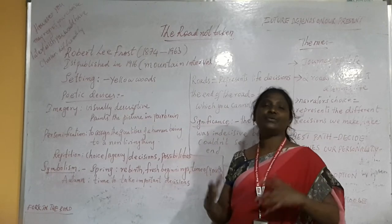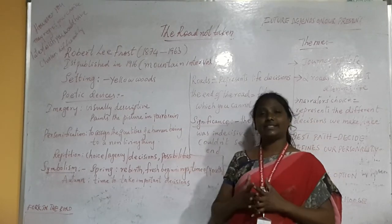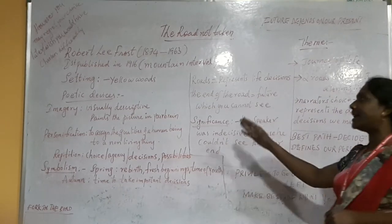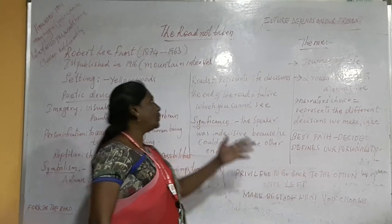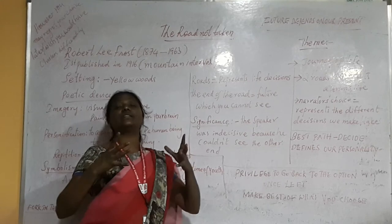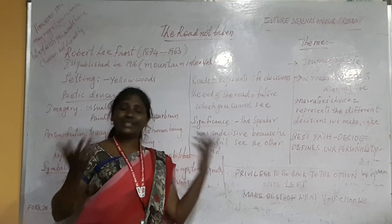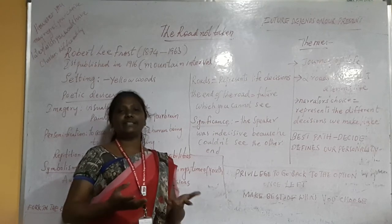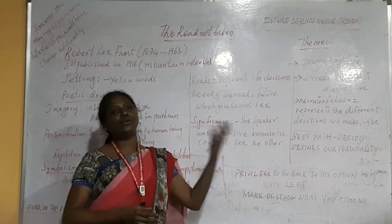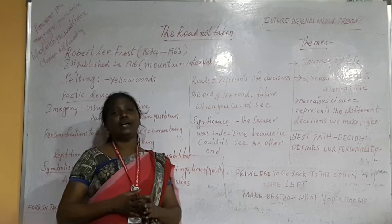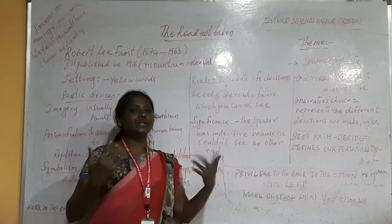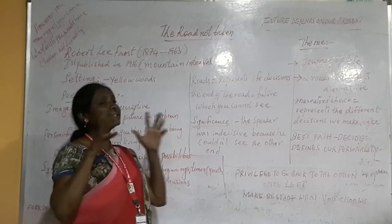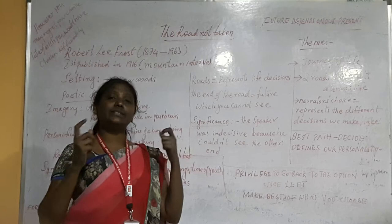This poem is very important for all of you, dear students, because it helps us understand how to take decisions in real life situations. The roads represent the different situations in our life where we need to take decisions. We cannot take two decisions at a time. For example, choosing Mechanical or CSE — once you go for one, you cannot come back and take the other. Whatever you have chosen, you should stick to that.